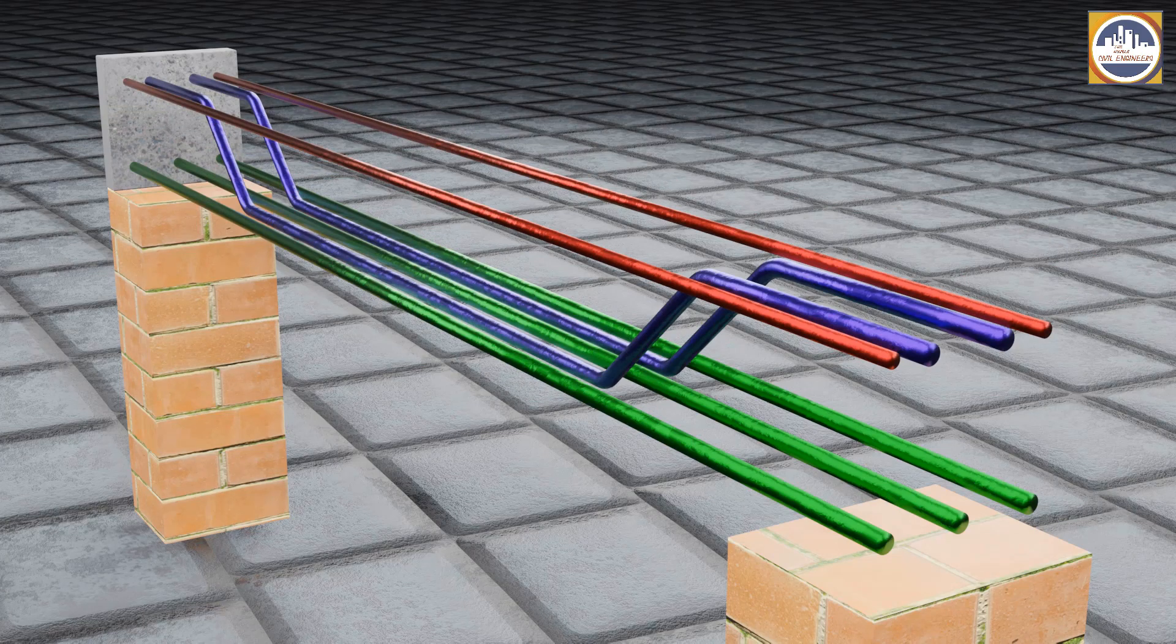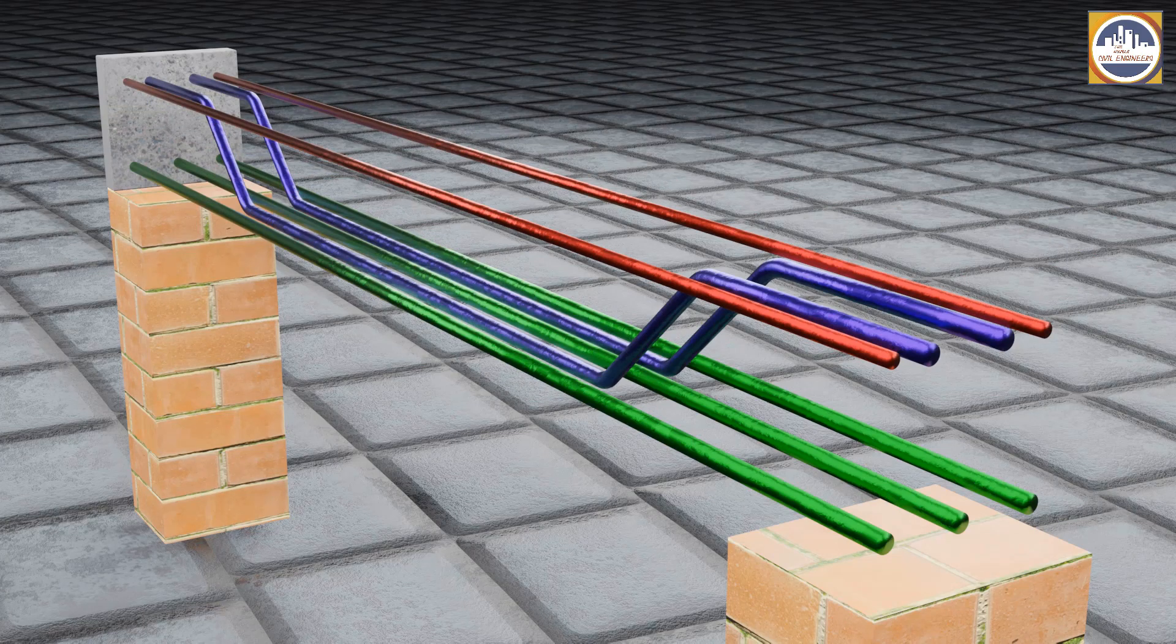And then these red color bars are the hanger bars. In this particular beam, these are provided just to support the stirrups.